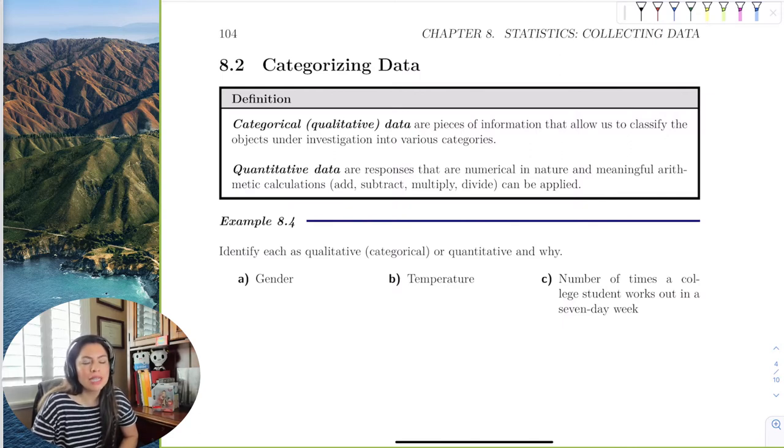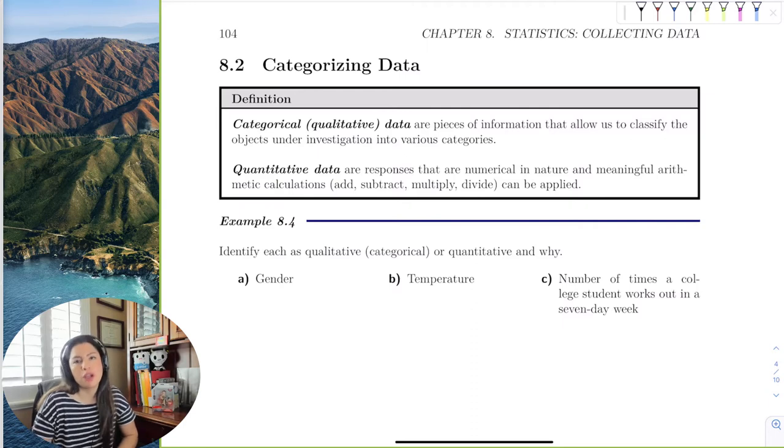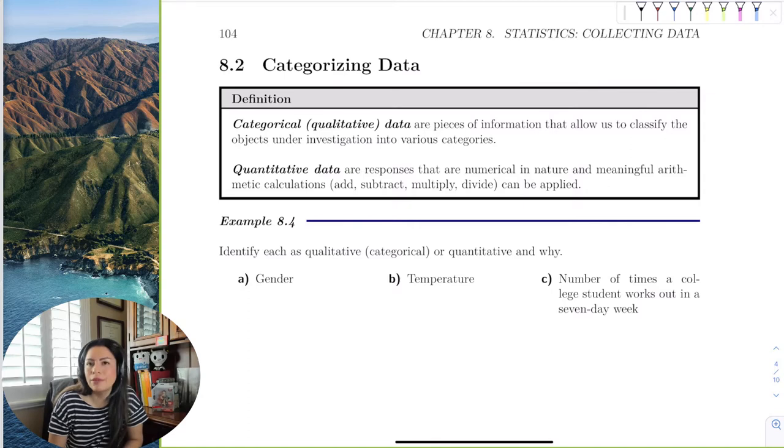Whereas quantitative data, the responses are a number or a measurement. And we can find meaningful statistical results by doing arithmetic operations. So for example, like height. So height, we could put in 67 inches is 5 feet 7 inches. So 67 inches is the average. We can add up heights and find the average.